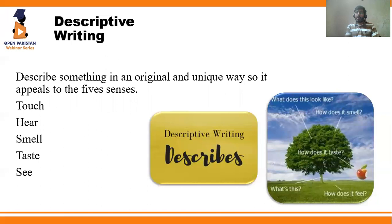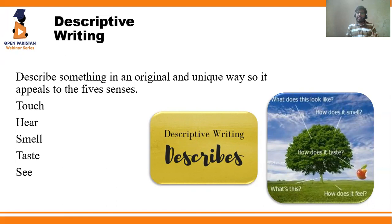But before we explore how to write about fictional characters, we need to first understand what descriptive writing is. In its simplest terms, descriptive writing means to describe something in an original and unique way so that it appeals to our five senses — sense of touch, sense of hearing, sense of smell, sense of taste, and sense of sight. We need to write descriptively so that we are not just telling something, but actually describing it.